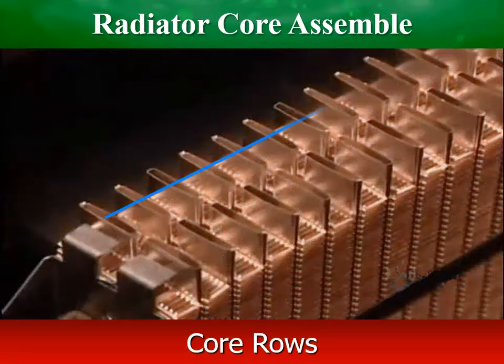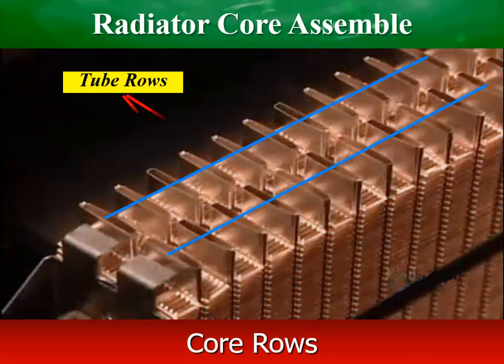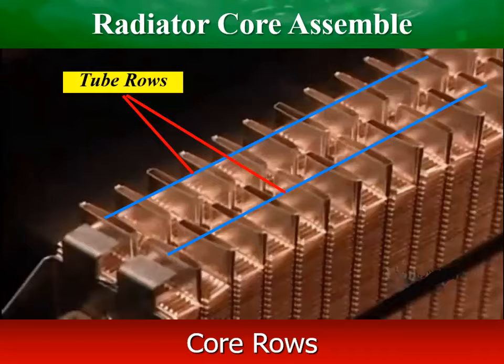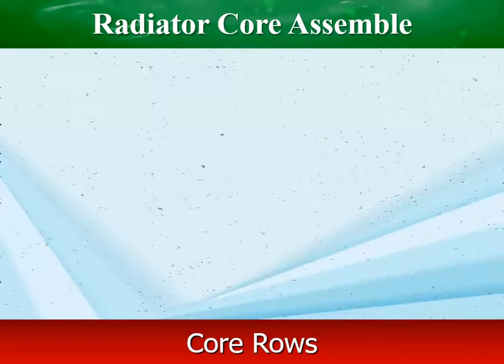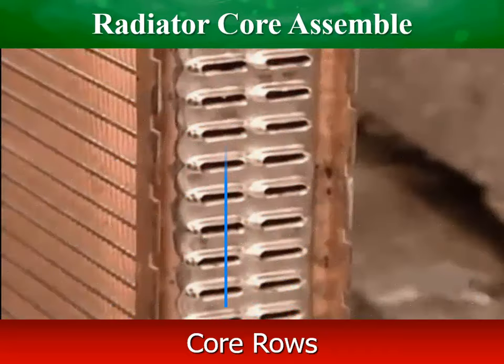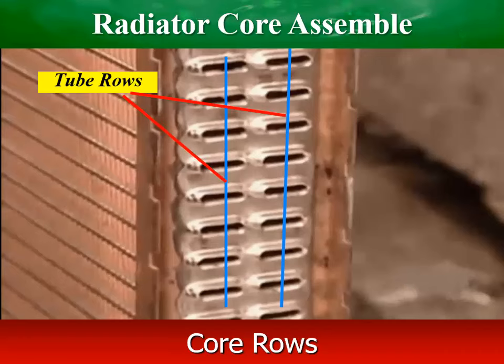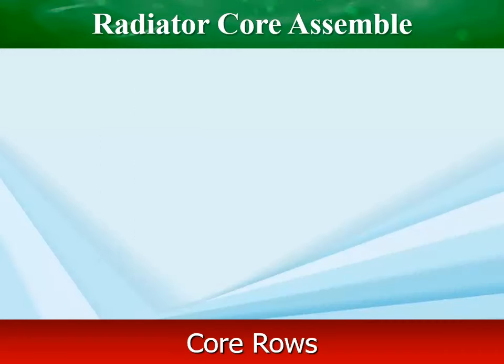Rows are the number of lines of tubes running from one face of the core to the other, front to back. Typically, the higher the number of tube rows within a radiator core, the higher the cooling capacity a radiator has.